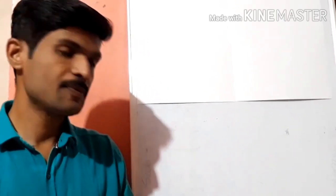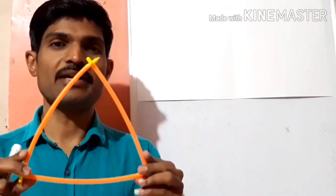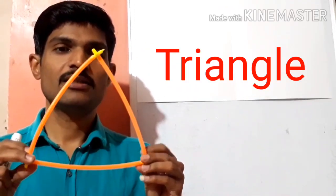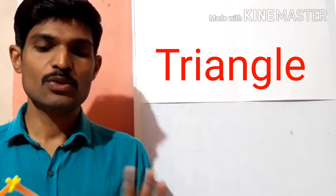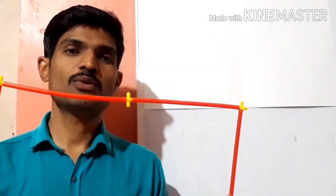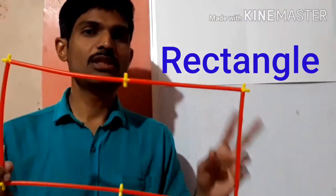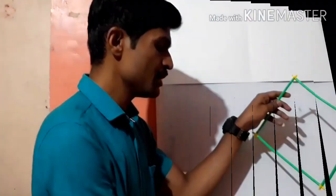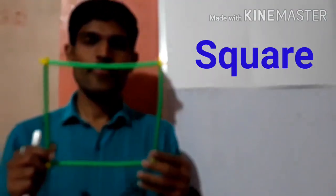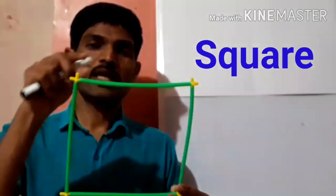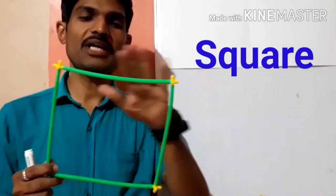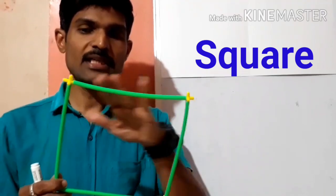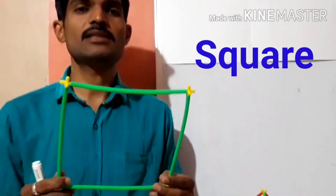We know triangles — a triangle has a flat surface and we measure only two things: base and height. Rectangle also has length and breadth, so only two things. Square is also a two dimensional shape with length and breadth. A square can be a rectangle, but all rectangles are not squares, because square means all sides are equal — length and breadth both are equal. That's why we call it a square.